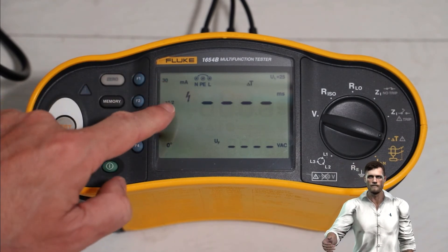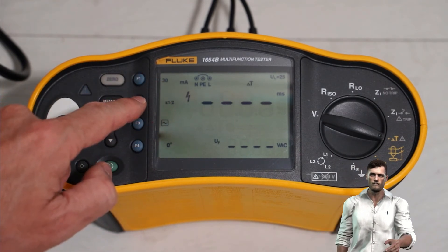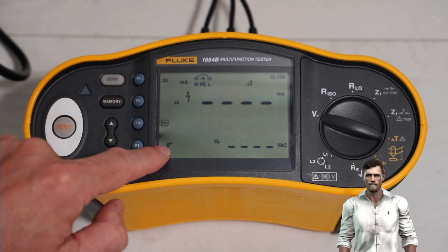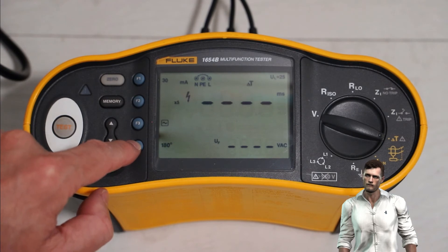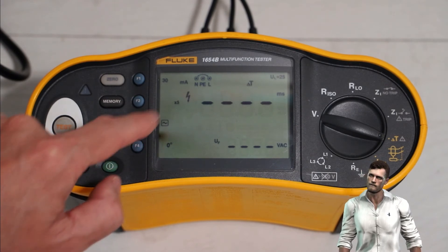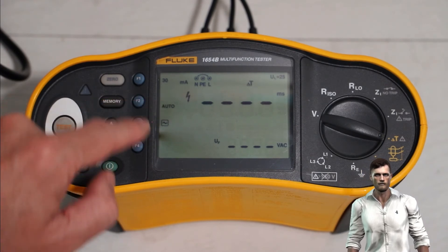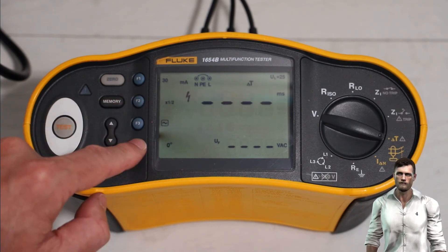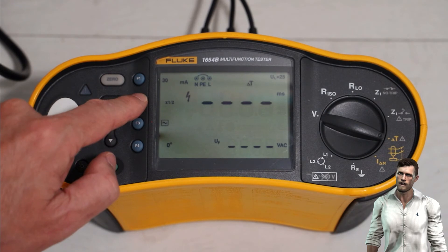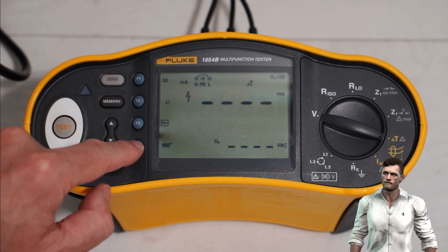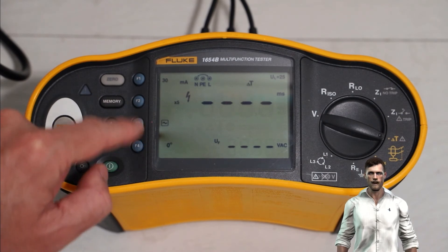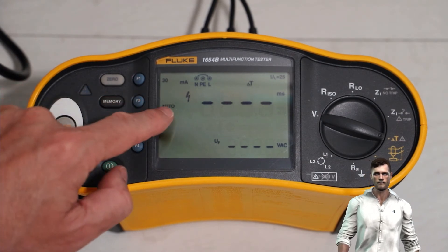Next, with F2, I am going to choose the leakage current that we are going to use to carry out the test. We can select among several values, for example half, which means that the equipment will generate a leakage current equal to half the nominal value of the differential protection. We can also choose one time and also five times, and finally we can select the auto option, and in this case the equipment will apply all the above currents sequentially. For this demonstration, I will leave it in auto mode in order to do a full differential test.